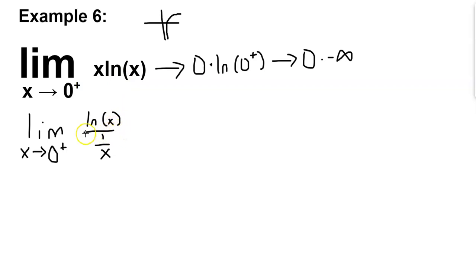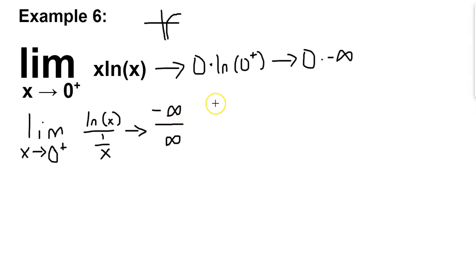If we substitute 0 plus into ln of x over 1 over x: ln of 0 plus gives negative infinity, and 1 over 0 plus — as we approach 0 from the right side, that value keeps getting smaller and smaller, so the whole fraction gets larger and larger. So we get negative infinity over infinity, which matches the indeterminate form of infinity over infinity for L'Hopital's Rule.